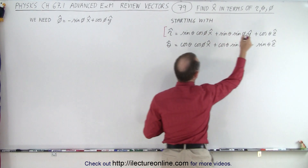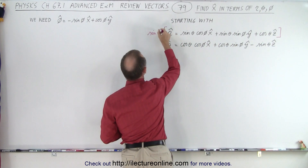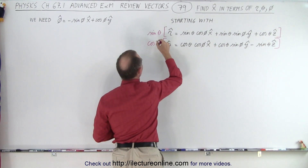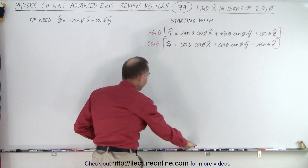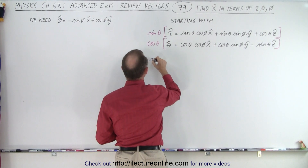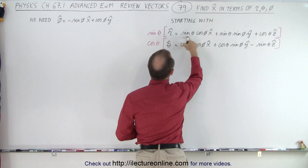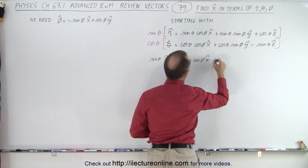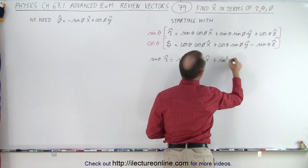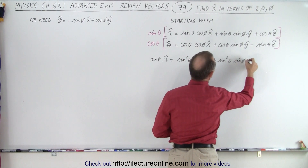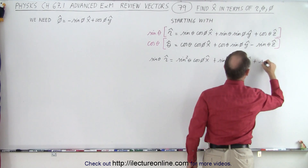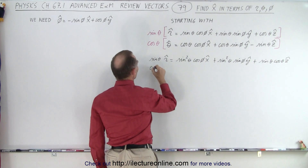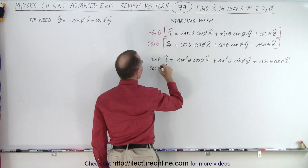We're going to multiply both sides of this equation by the sine of theta, and then multiply both sides of this equation by the cosine of theta. On the left side we get the sine of theta times the r unit vector is equal to the sine squared of theta times the cosine of phi x unit vector, plus the sine squared of theta times the sine of phi y unit vector, plus the sine of theta times the cosine of theta times the z unit vector.